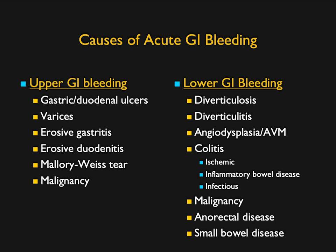Causes of upper GI bleeding include gastric ulcers, duodenal ulcers, varices in patients with cirrhosis, erosive gastritis or duodenitis, Mallory-Weiss tears, and malignancies. Lower GI bleeding is typically caused by diverticulosis and diverticulitis, angiodysplasia, colitis, malignancies of the small or large bowel, anal rectal disease such as hemorrhoids or AV malformations, and a range of small bowel diseases including Crohn's.